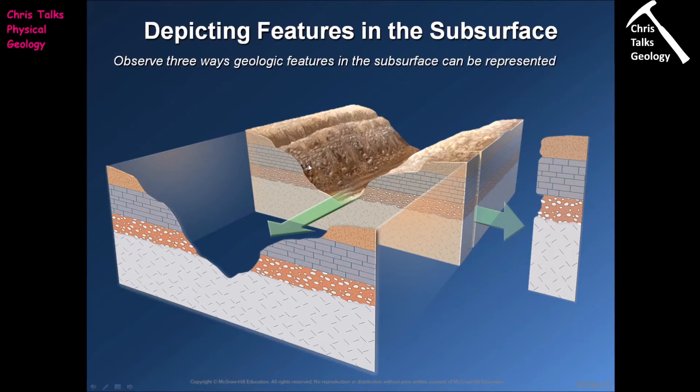The final piece of data we collect is something referred to as the dip direction — if our layer of rock has an angle to it, which way is that angle going? Is it dipping towards the north, east, south, west, or somewhere in between? So for every layer of rock that we can find, geologists will try to get its thickness, its dip, and its dip direction. We'll use these to produce diagrams of the subsurface and predict what's happening to layers of rock where we can't see them.